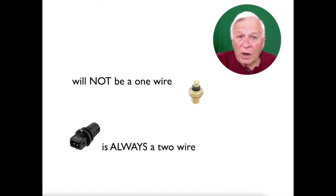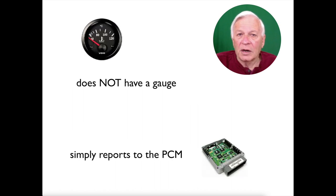It is not a one wire. It will always be at least two wires, sometimes more, and the diagram would be able to tell you how many wires and which ones they are. It does not have a gauge. It simply reports to the PCM, so you cannot monitor this on your dashboard.